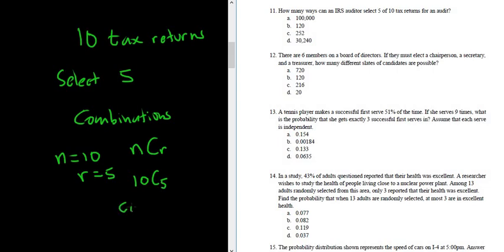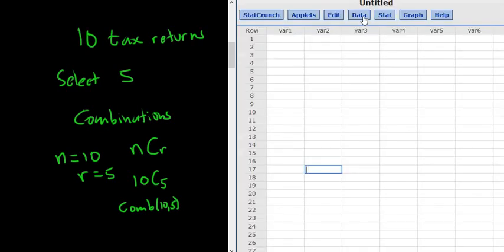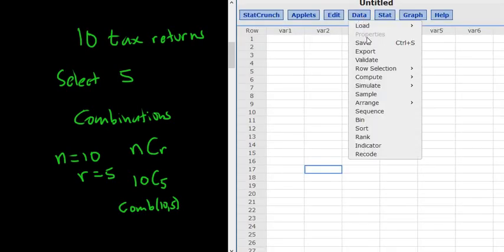In StatCrunch, the command is comb 10 comma 5. So let's go ahead and go to StatCrunch and type it in to get the answer. So I'm going to click on this, and in StatCrunch, it's data, compute, and expression.